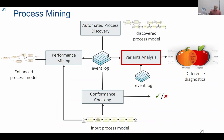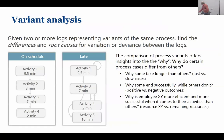The final operation in process mining is called variance analysis. Variance analysis means you take your log, split it into two or more sublogs, and compare them to identify reasons why something is going wrong or being done well. The idea is to take two variants of your process, separate your event log accordingly, and compare them to find their differences.